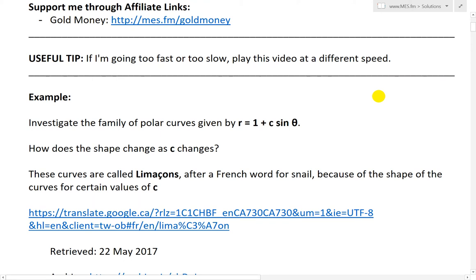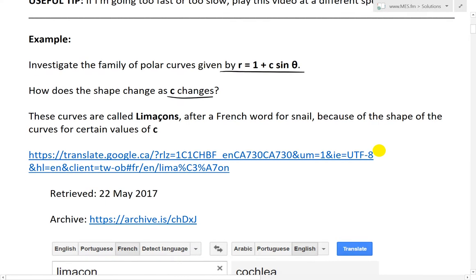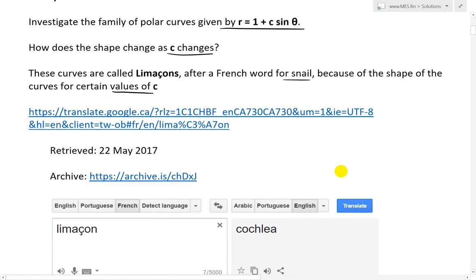So the example states investigate the family of polar curves given by R equals 1 plus C times sine theta and we're asked how does this shape change as C changes. Yeah, so C is just a constant. These curves are called Limaçons after a French word for snail because of the shape of the curves for certain values of C. So yeah, that's from my calculus book.